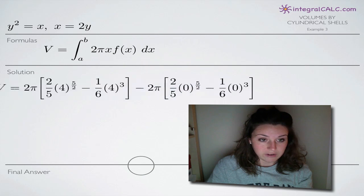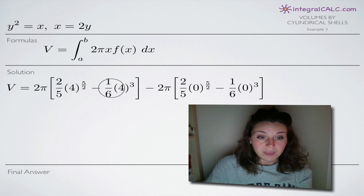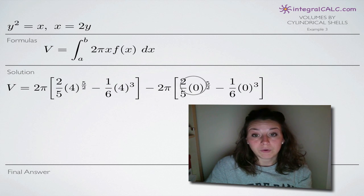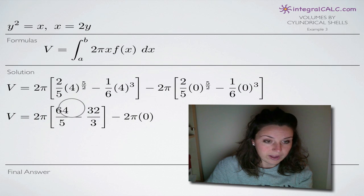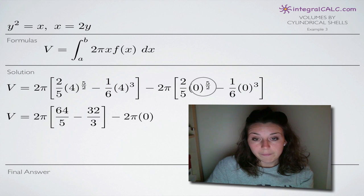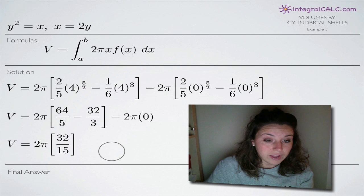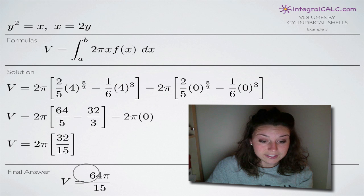Now we evaluate the definite integral. We plug in 4 into our function, then subtract the result of plugging in 0. When we plug in 0, both terms become 0, so that part drops away. Plugging in 4 and simplifying: 2/5 times 4 to the 5/2 minus 1/6 times 4 cubed simplifies to 64/5 minus 32/3. Finding a common denominator of 15, we get 192/15 minus 160/15, which equals 32/15. Multiplying by 2π gives our final answer: 64π/15.